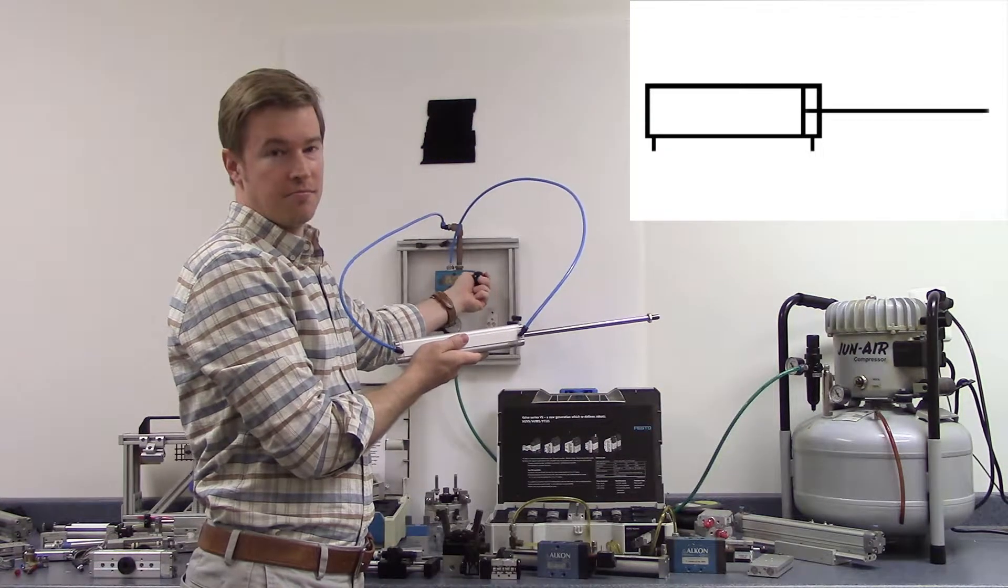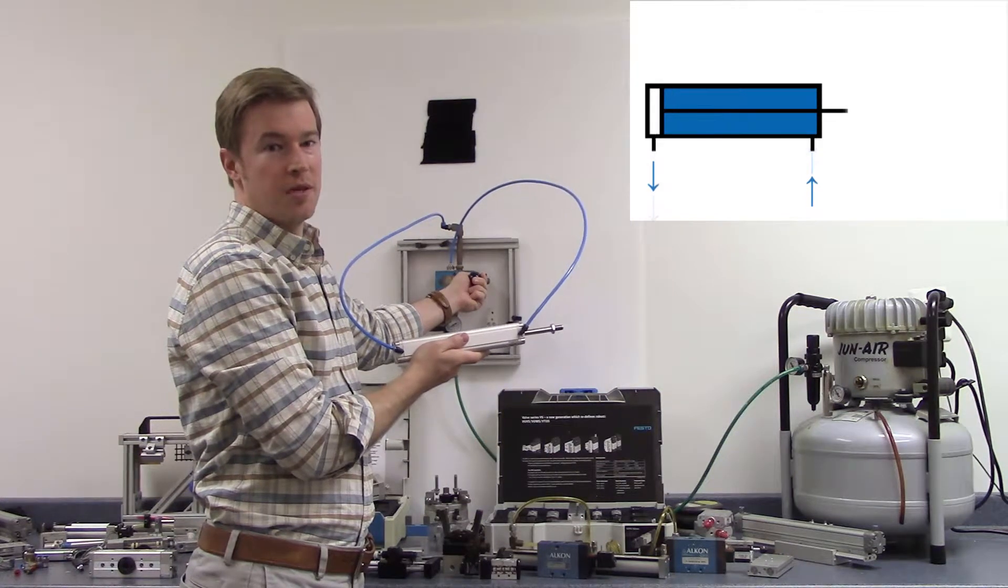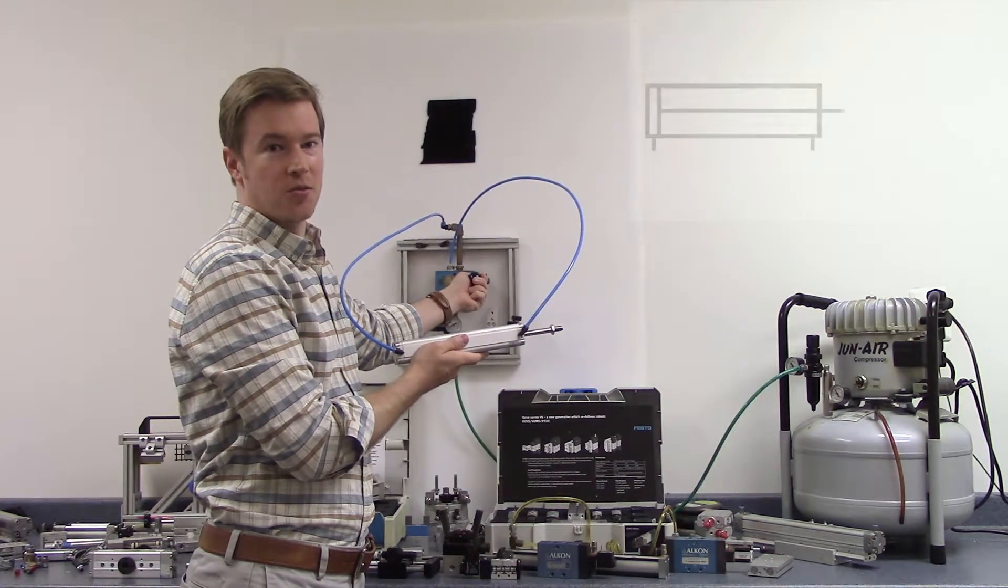When the airflow is reversed, air moves through the cylinder in the opposite direction, causing the rod to retract.